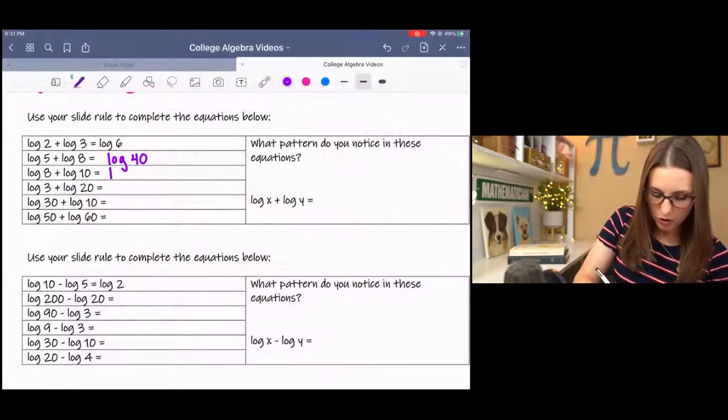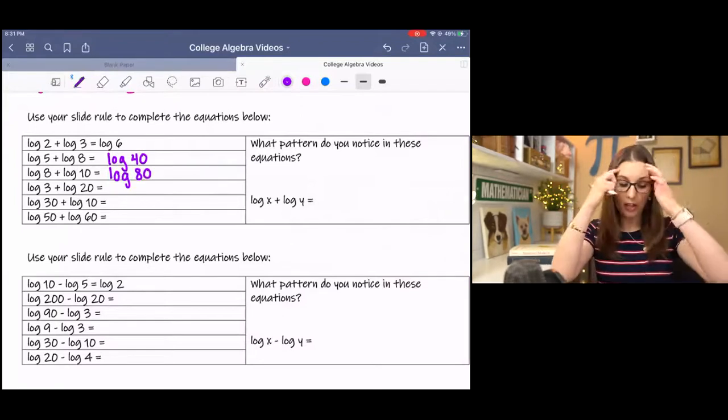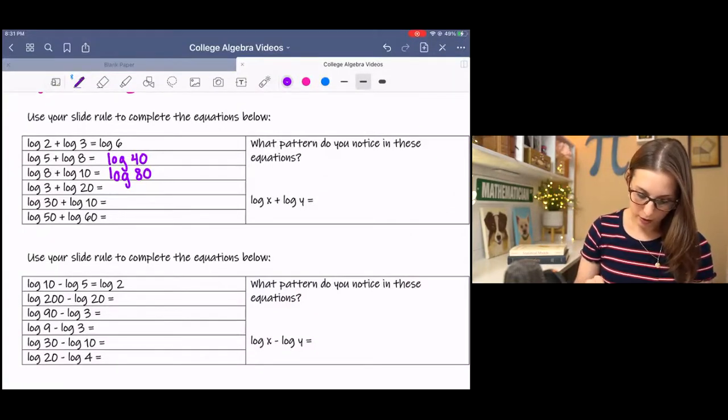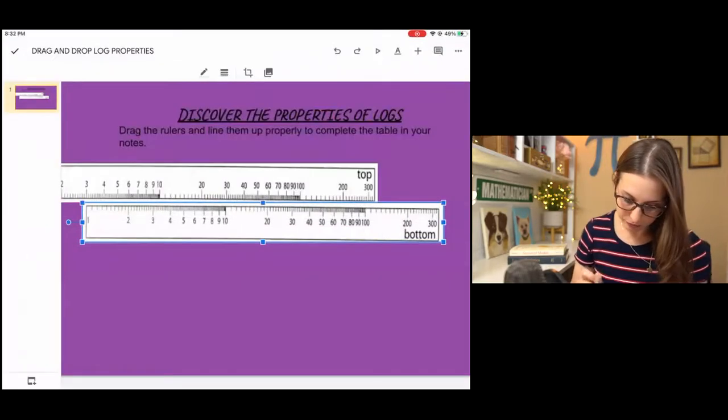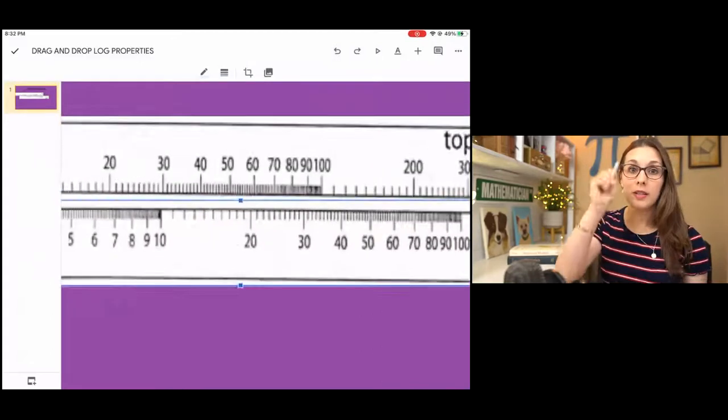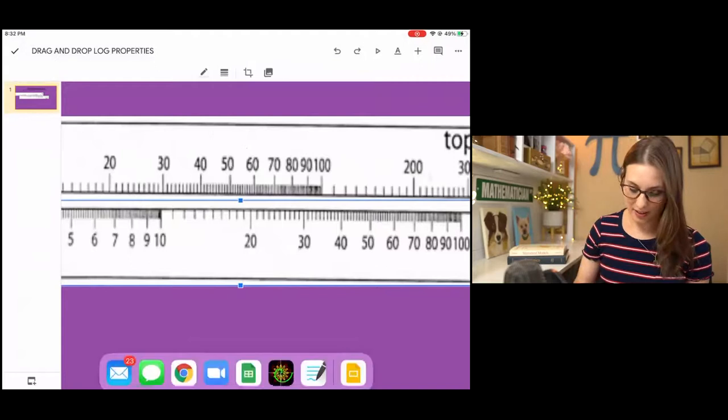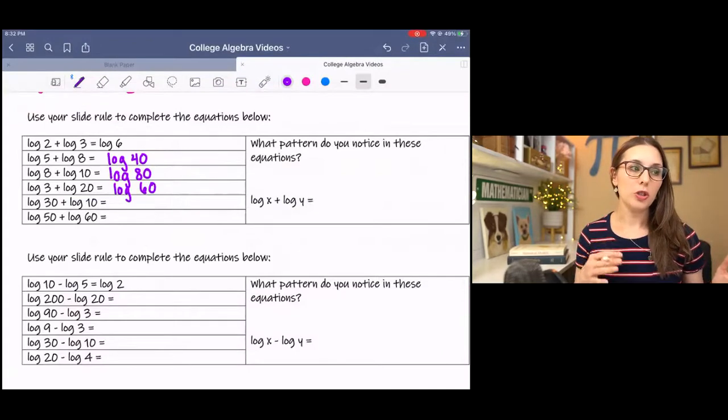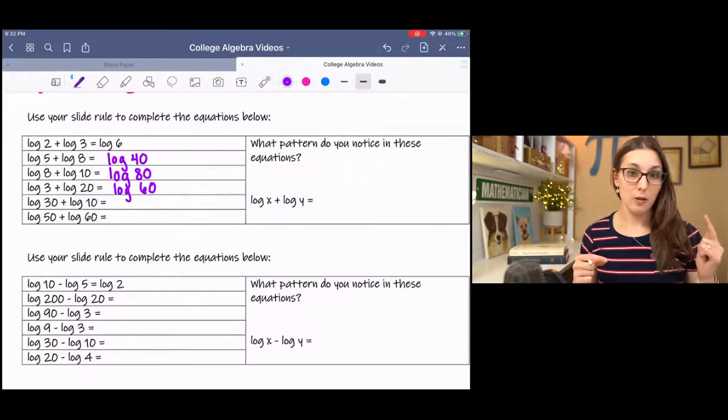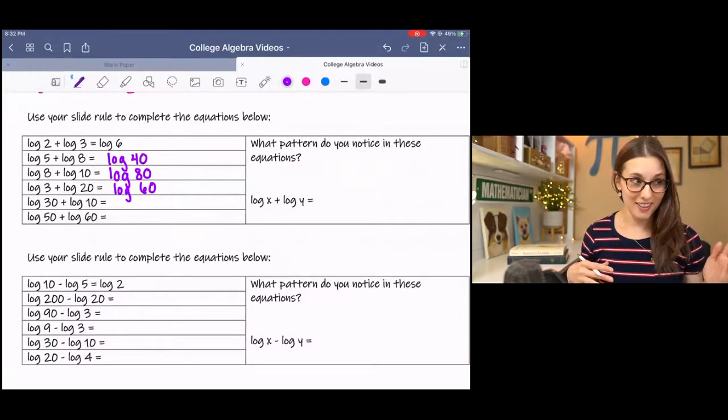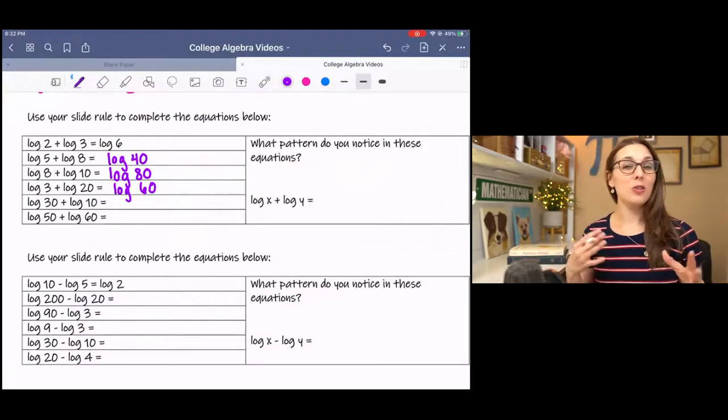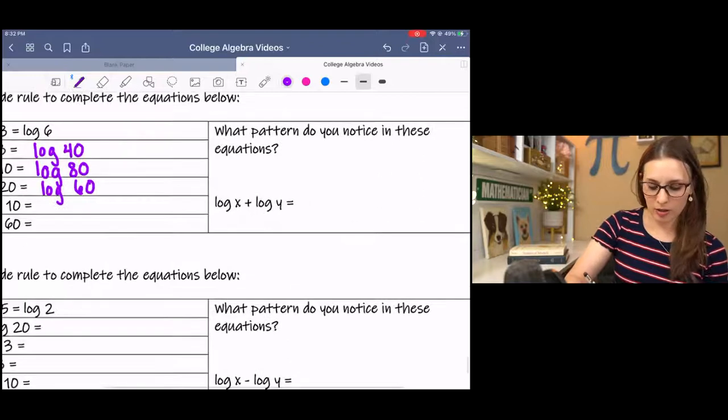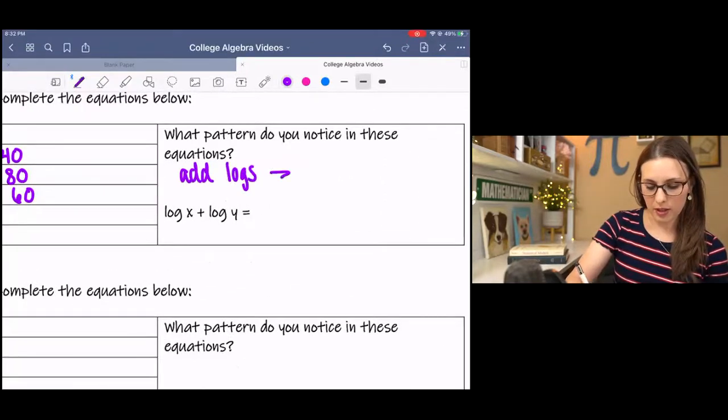So you might be able to see a pattern emerging. If not, we will do one more. It was log 3 plus log 20, and log 20 lines up with 60. So let's take a look at these. Log 2 plus log 3 was log 6. Log 5 plus log 8 was log 40. Log 8 plus log 10 was log 80. So maybe addition translates into multiplication. When we add logs, that yields multiplication.